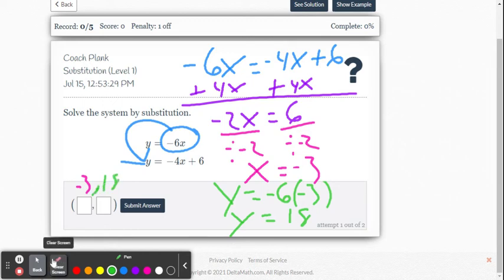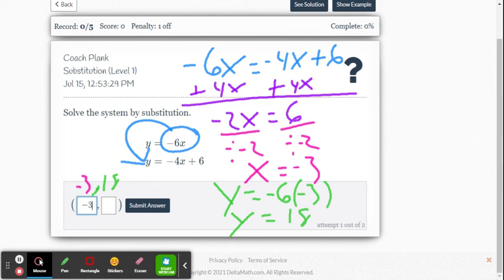All right, so let's go ahead and write this into the Delta Math system here, and double check to make sure we are correct. Negative 3 and 18.